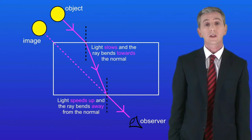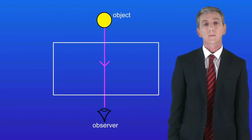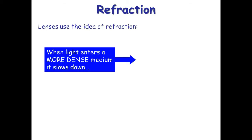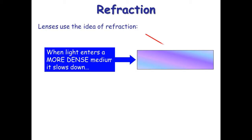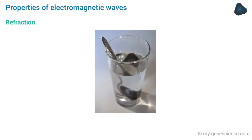One final point about refraction: if a ray of light enters the block along the normal, it does not change direction. Refraction occurs because light slows down going from air into glass, causing it to bend towards the normal; as it emerges from glass back into air, it speeds up and bends away from the normal.